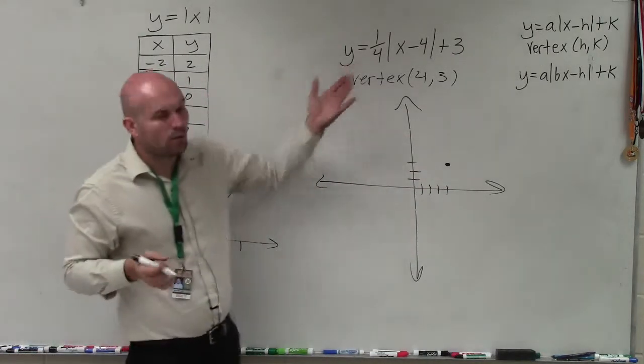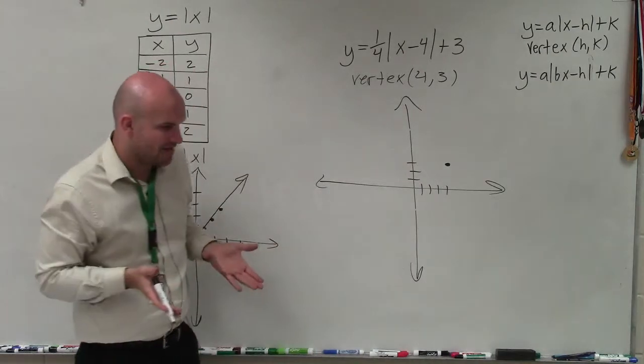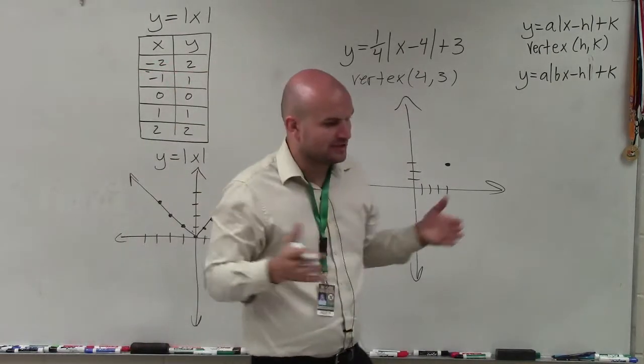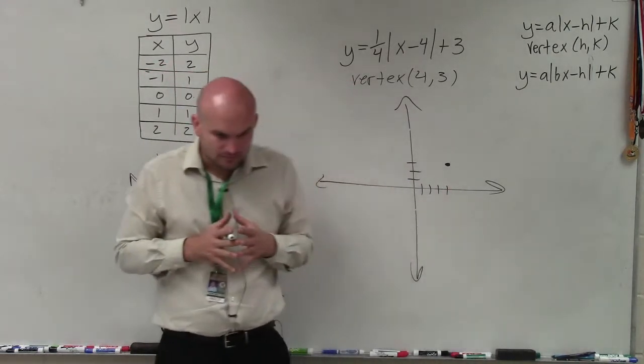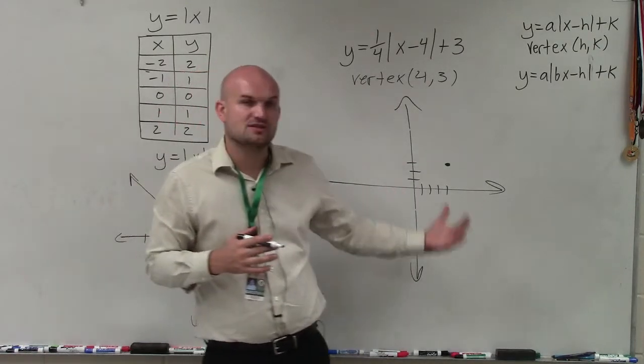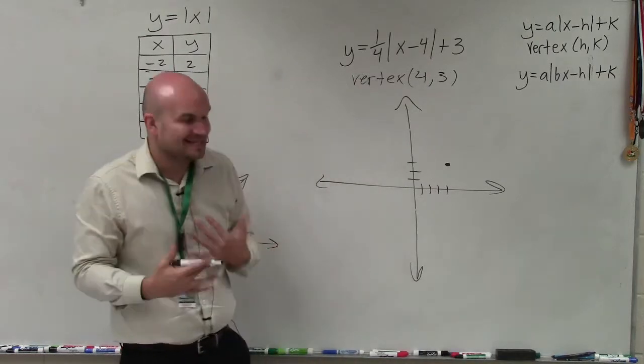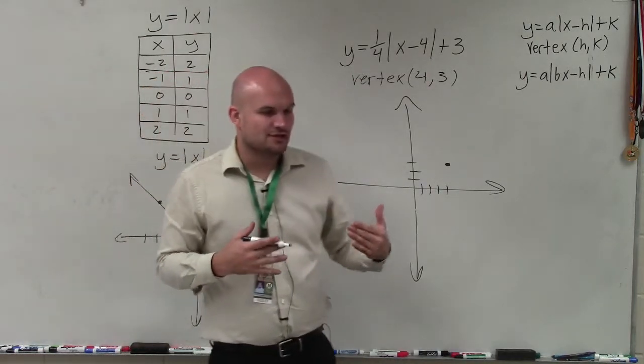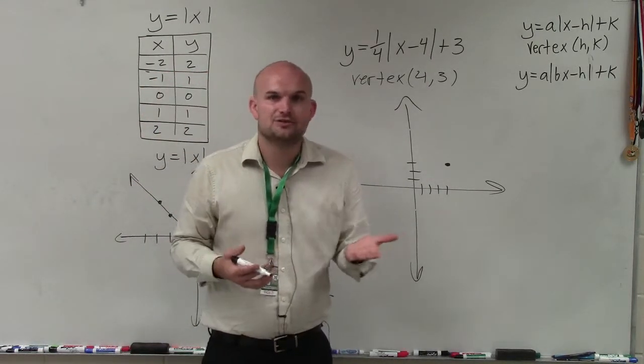Now the next thing is I need to determine what is my one-fourth going to be doing to my graph? Well, what the one-fourth is going to be doing is that is going to be stretching horizontally my graph. Now there's a way we can work on this as far as finding our points, but I think the easiest way to understand this is just to use a table of values to find two points.